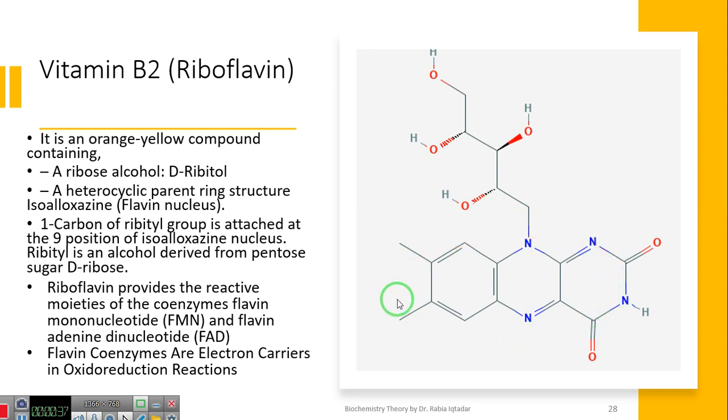First carbon of ribityl group, this is when ribose sugar has been converted into alcohol, this is called as ribityl. First carbon of this chain is attached on the position 9 of flavin nucleus. Ribityl, again I already explained that. Ribityl is an alcohol derived from pentose sugar, D-ribose. Here you can see that there is five carbon sugar: one, two, three, four and five.